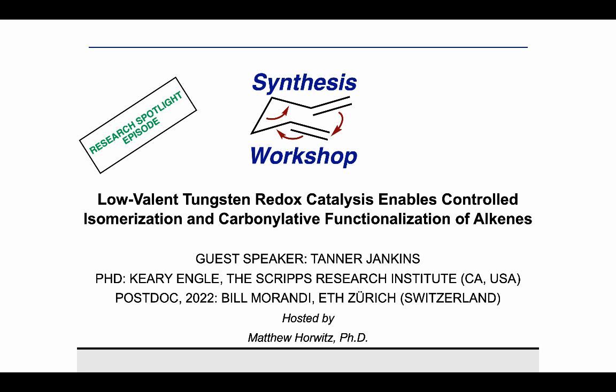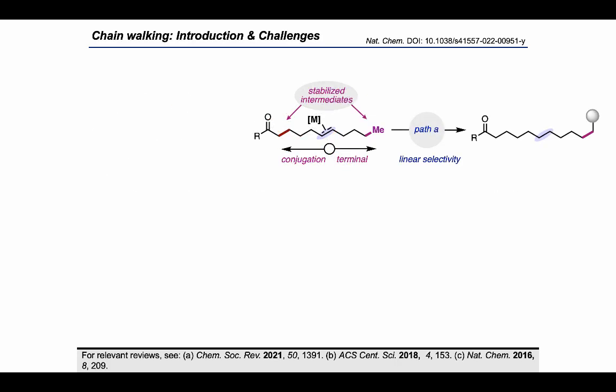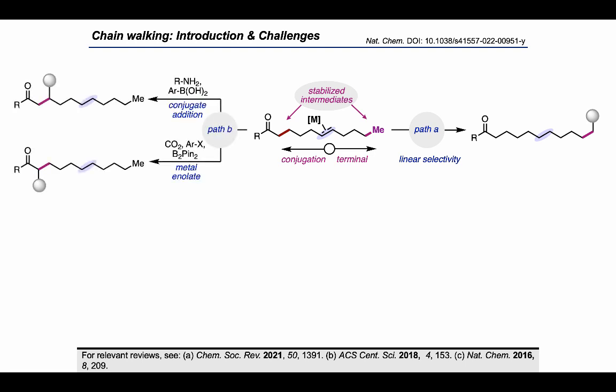First, I'll start with a brief introduction about some of the precedent in chain-walking functionalization, and then discuss how this idea was conceived of and why we decided that tungsten would be particularly well apt for such a transformation. Chain-walking has emerged as a powerful strategy for forging C-C bonds at remote C-sp3 sites by the controlled migration of a metal catalyst through a hydrocarbon chain. As these reactions are under thermodynamic control, these protocols can promote functionalization at either the terminal position of an alkyl chain, largely due to steric constraints as shown in Pathway A.